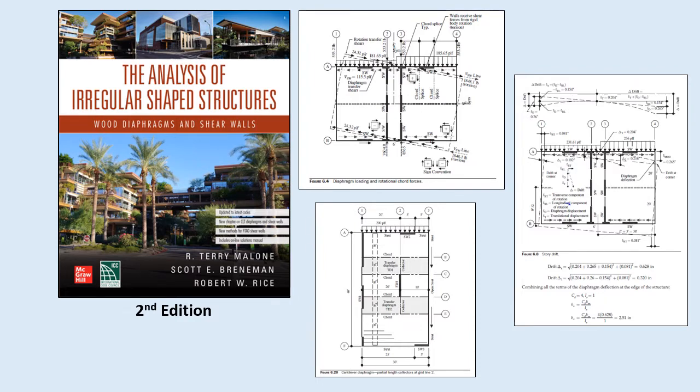The purpose of this publication is to consolidate valuable information into one source to provide comprehensive coverage of the analysis of modern irregular-shaped structures, including numerous step-by-step examples, and to bring it to the forefront of the engineering and code official communities. The secondary objective is to demonstrate how to achieve the necessary complete lateral load paths through shear wall and diaphragm discontinuities. The complex diaphragm, shear wall, and load path issues addressed in this book are representative of today's demand on design professionals and code officials.